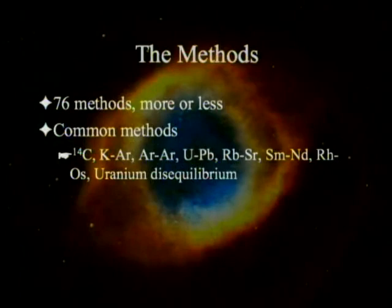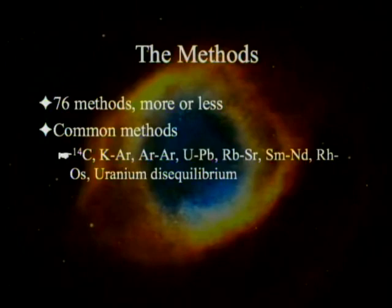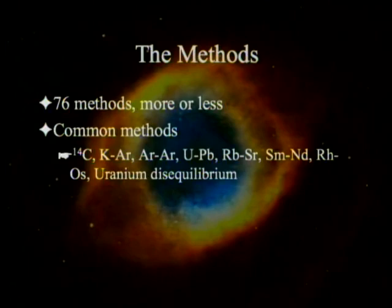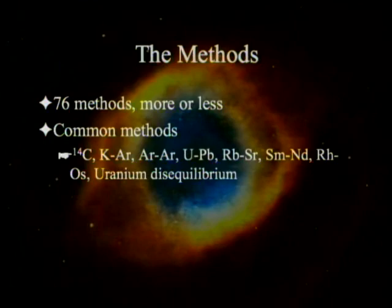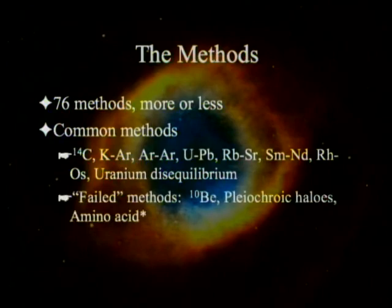The common methods are: carbon-14, of course, which deserves its own talk and we've given it already; potassium-argon; argon-argon, which is basically a variant of potassium-argon; uranium-lead, with several different uranium-lead methods; rubidium-strontium; samarium-neodymium; rhenium-osmium; and kind of an odd bird, uranium disequilibrium, which is separate from most of the others.